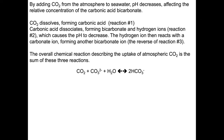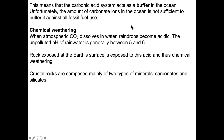CO2 dissolving forms carbonic acid — reaction number one. The carbonic acid dissociates forming bicarbonate and hydrogen ions — reaction number two — which in turn causes the pH to decrease. When the pH goes down, the water becomes more acidic. The hydrogen ion then reacts with the carbonate ion forming another bicarbonate ion, the reverse of reaction number three. The overall chemical reaction describing the uptake of atmospheric CO2 is: atmospheric CO2 plus carbonate plus water equals carbonic acid. The carbonic acid system acts as a buffer in the ocean, but the amount of carbonate ions is insufficient to buffer against all fossil fuel use — we're swamping the system with CO2.